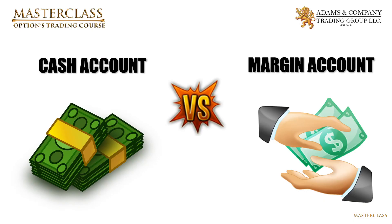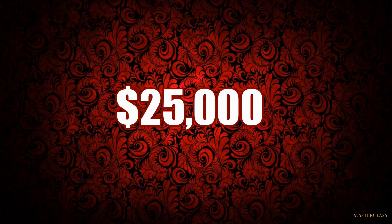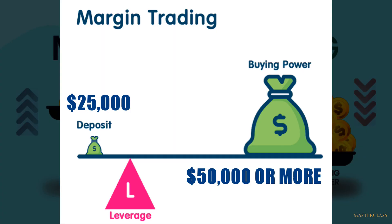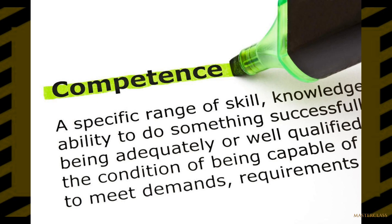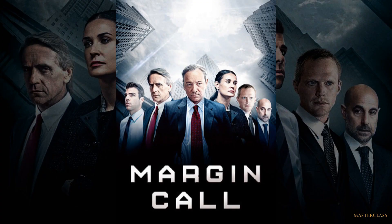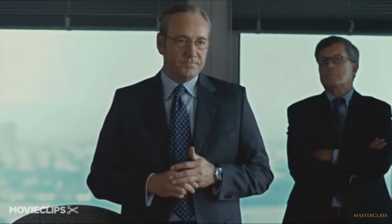Cash account versus margin account. Technically, to become an active day trader, you are required to begin with at least $25,000. This would allow you to establish a standard margin account. A margin account gives you leverage — a loan in a sense. Meaning, if you have $25,000 to trade with, your broker will allow you to purchase up to $50,000 worth of stock. However, I suggest steering clear of using other people's money until you are consistently producing profitable results. You do not want to be a victim of a margin call, which is when your broker comes to collect payment.